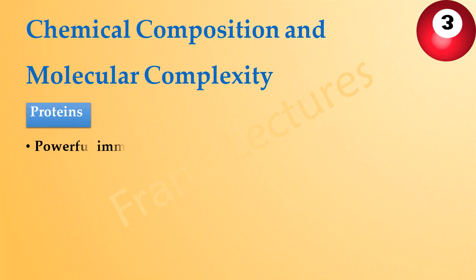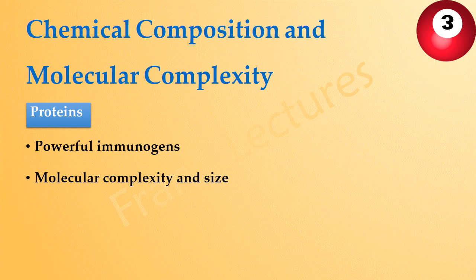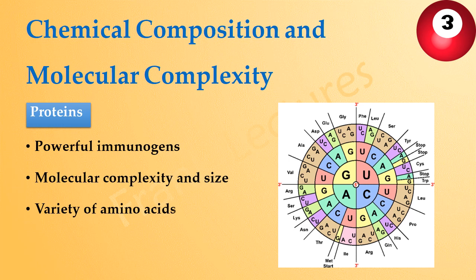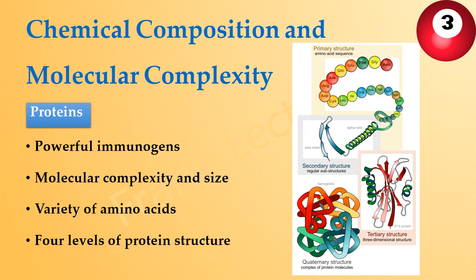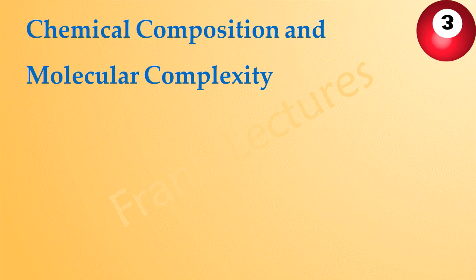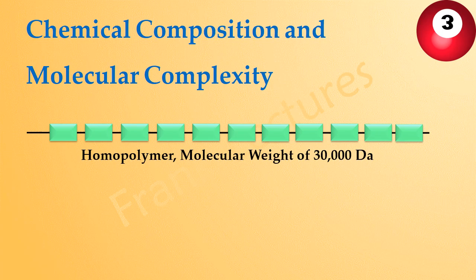Proteins are generally the most powerful immunogens, and this is because of their molecular complexity and size. The molecular complexity of proteins is a consequence of the variety of units known as amino acids of which proteins are made. Besides having a number of different amino acids, proteins have four levels of structure: primary, secondary, tertiary, and quaternary — all of which contribute to immunogenicity. For example, a homopolymer of a single amino acid with a molecular weight of 30,000 daltons is not immunogenic despite its size, because of the absence of chemical complexity.